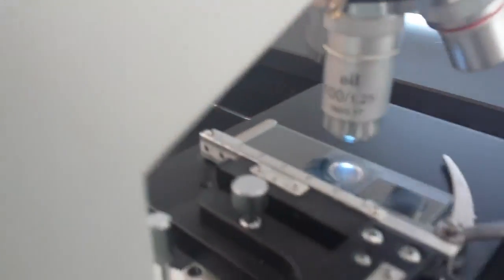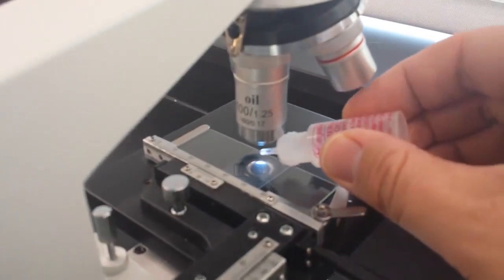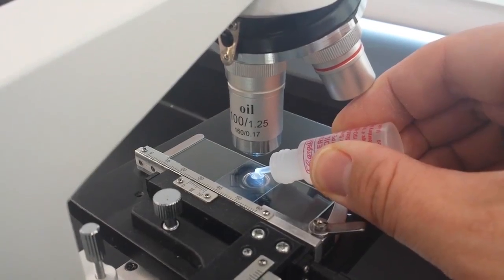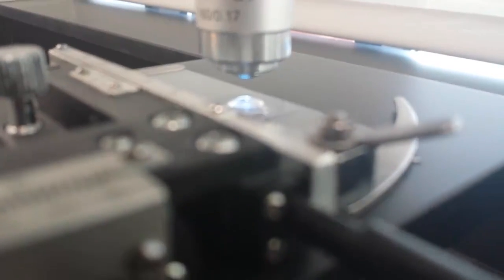Lock it into place, and I'm going to use a little bit of that immersion oil. Put a little drop right here, and then all I have to do is I lower down the objective until it makes contact with the immersion oil, just like that.